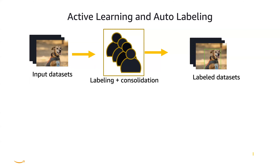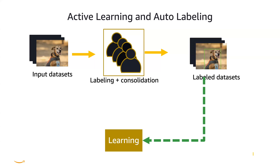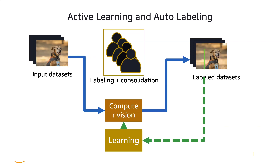Ground Truth also lets you do active learning and auto-labeling. You send your input data set to labelers who draw bounding boxes around objects. But with active learning, after you reach about 1,000 labeled pieces of data, you have the option to start training a model. Once that model is done, instead of sending data to labelers, you can send it to the model — which reduces costs quite a bit. The larger the data set, the more cost-effective this option becomes.